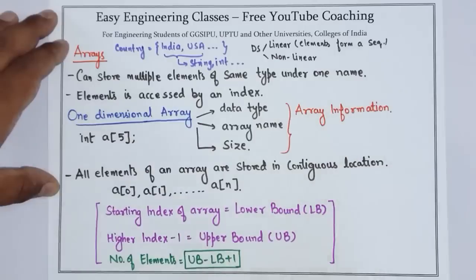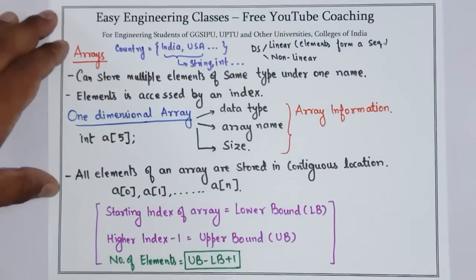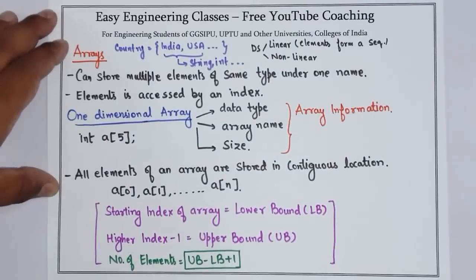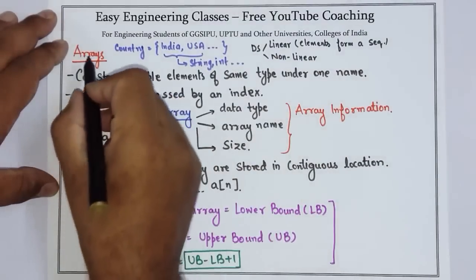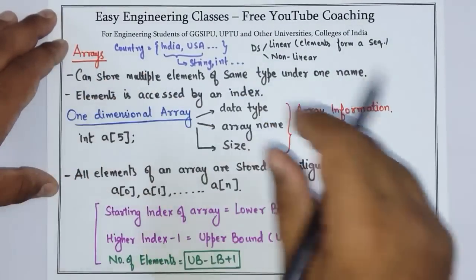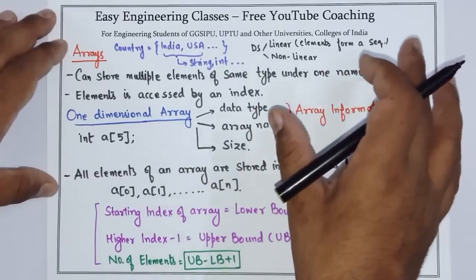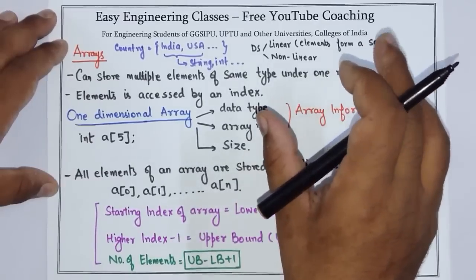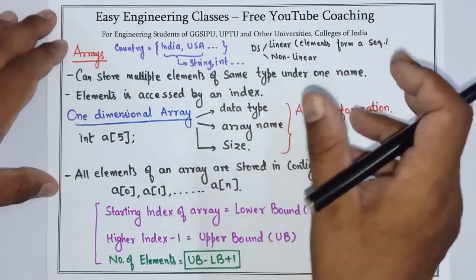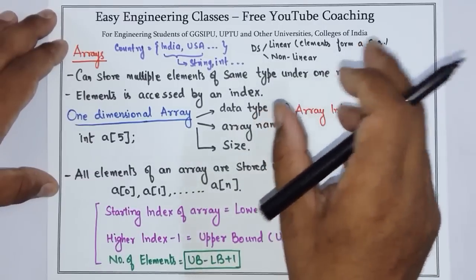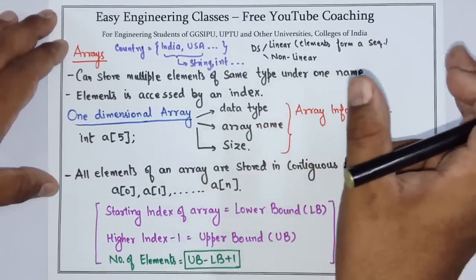We can represent linear data structures in two ways: either with arrays or with linked lists. And in arrays, the elements are stored in sequential memory.